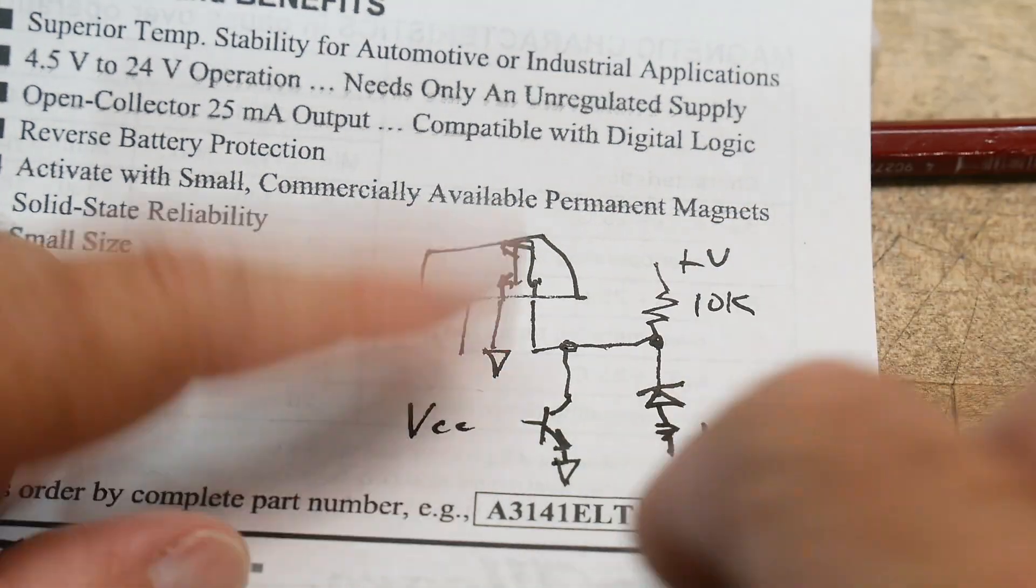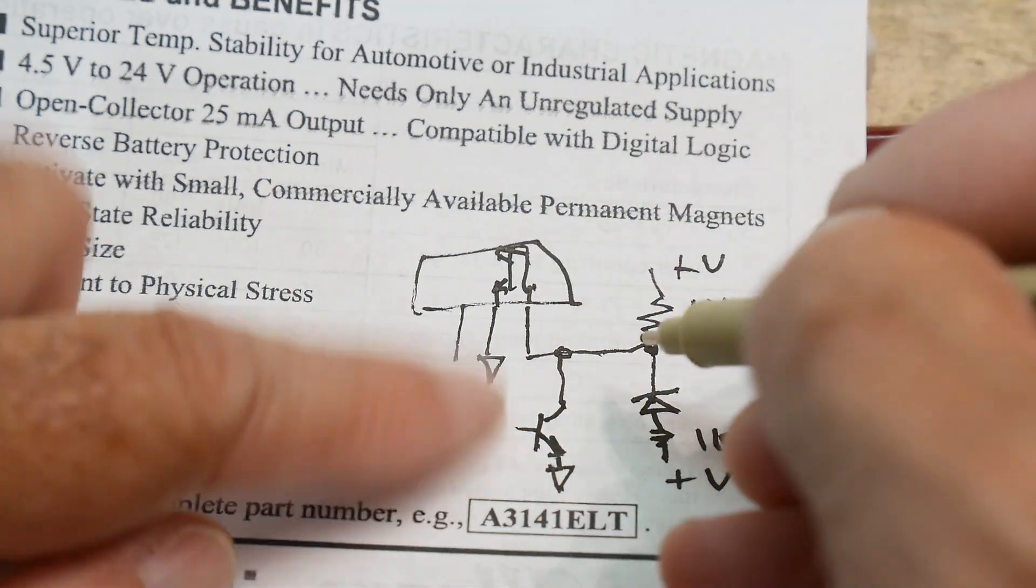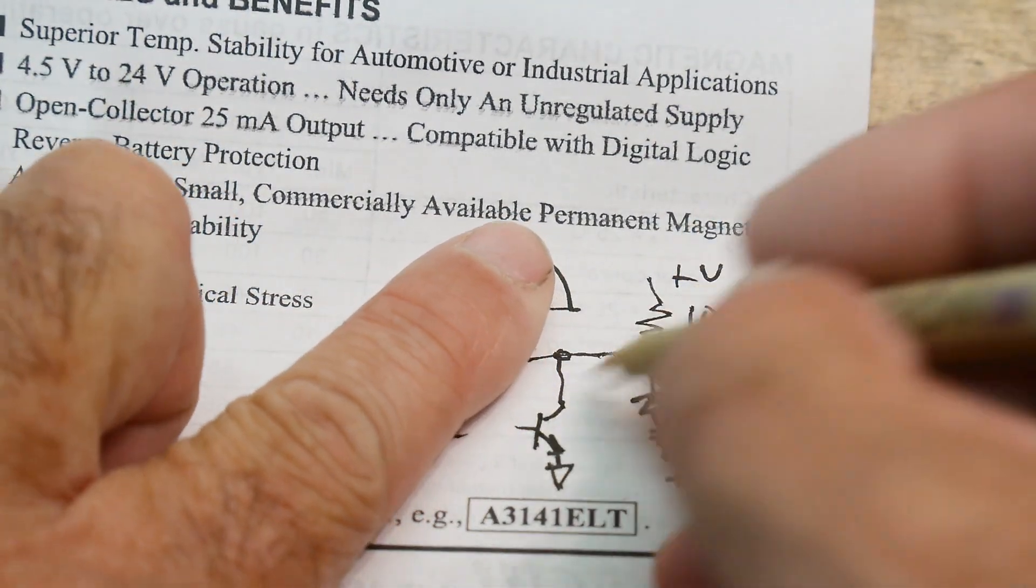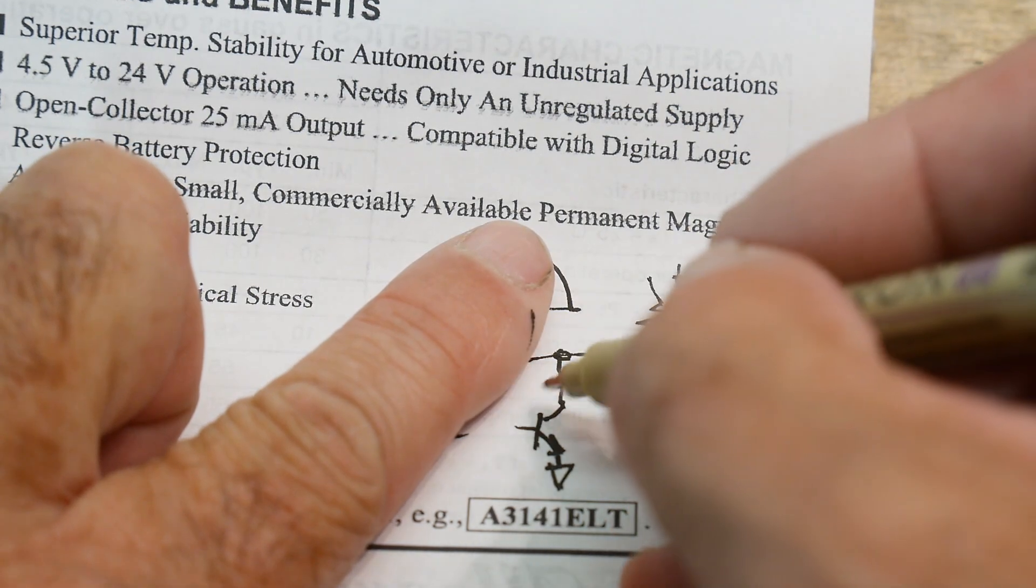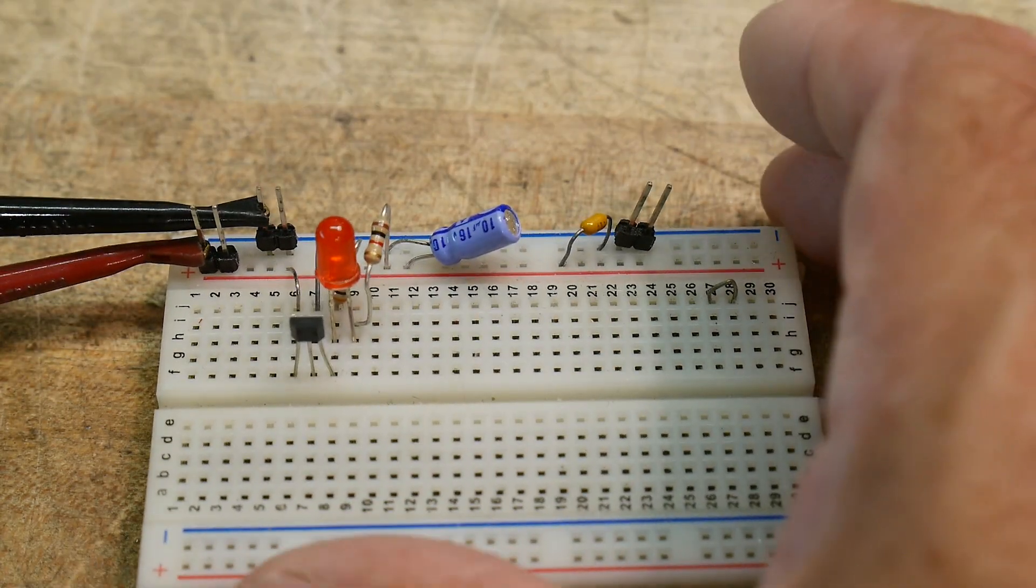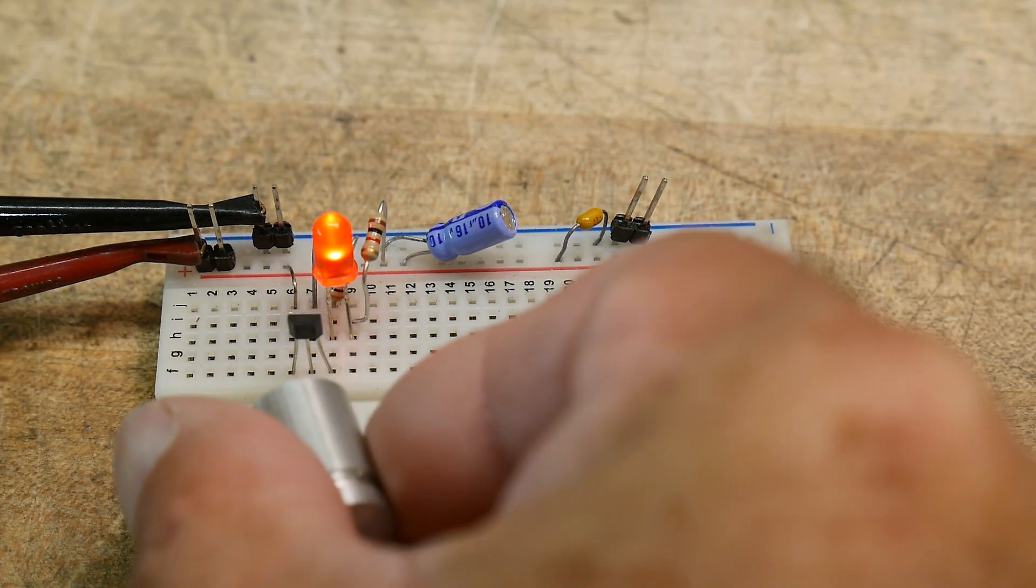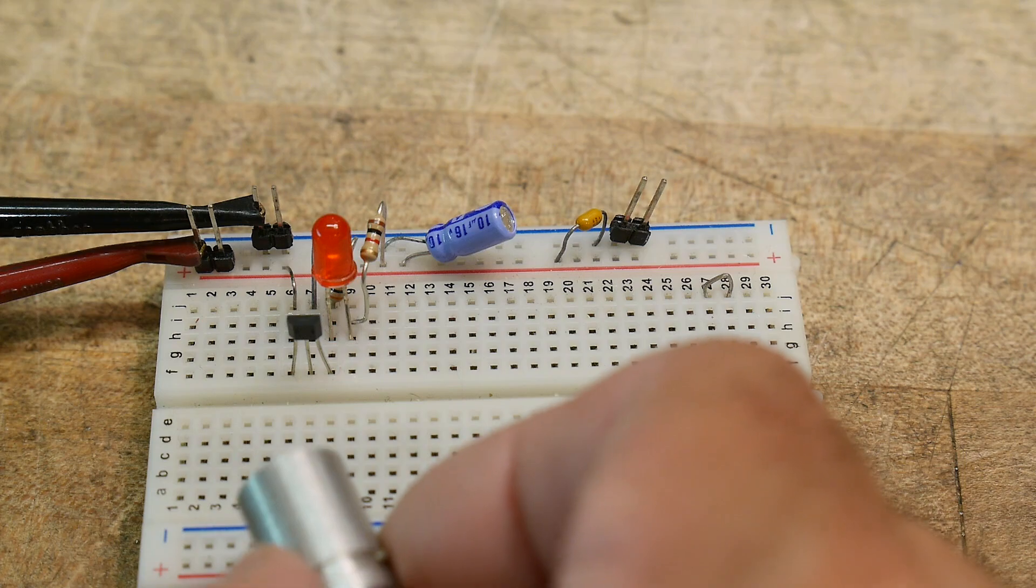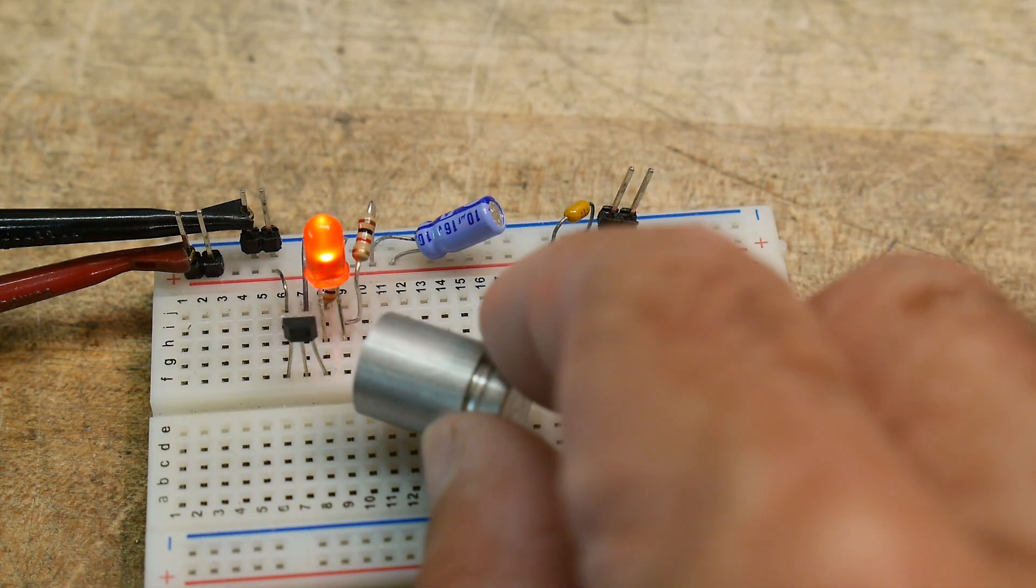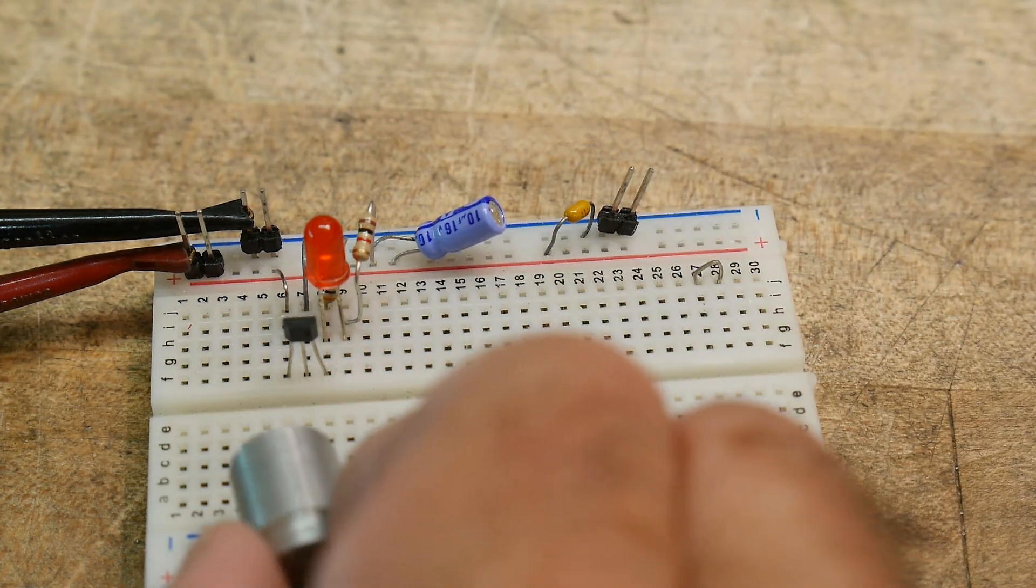It's going to pull down to ground when it sees a magnetic field. So normally this will be high, and then if it sees a magnetic field, this will pull low, and then current will flow through the LED, and it will turn on. I have 5.6 volts going into this thing. And here's a magnet. Look at that. It turns on. So that's pretty cool.